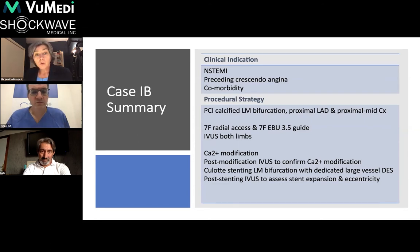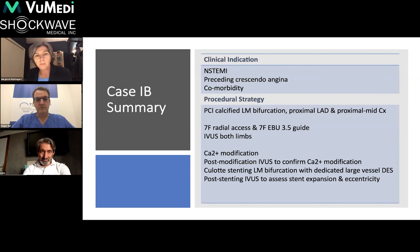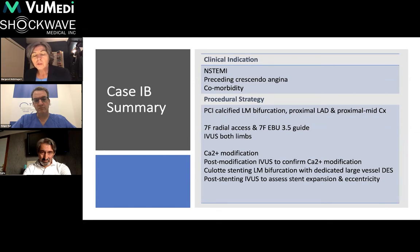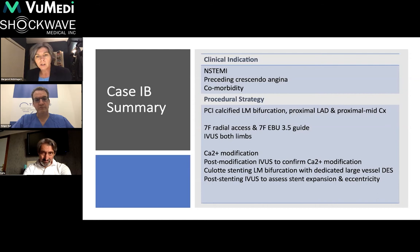The plan was to use seven French radial access with a 7F EBU 3.5 guide, starting with two wires and then IVUS of both the LAD back into the left main and the circumflex back into left main. Calcium modification was anticipated. After modification, the plan was to re-IVUS and confirm adequate calcium treatment, then use culotte stenting for the left main bifurcation, since the LAD and circumflex calibres appeared similar.